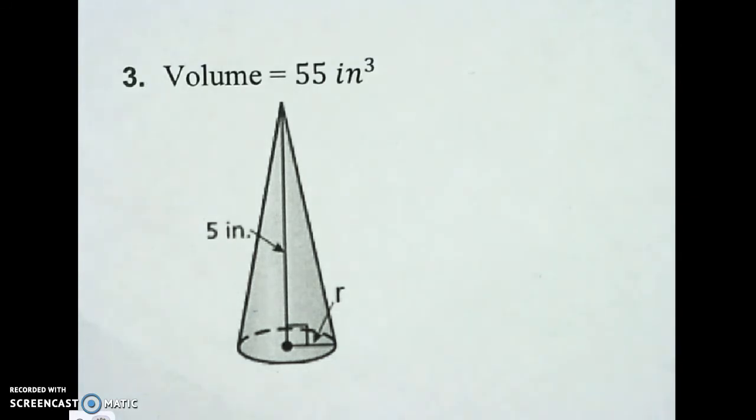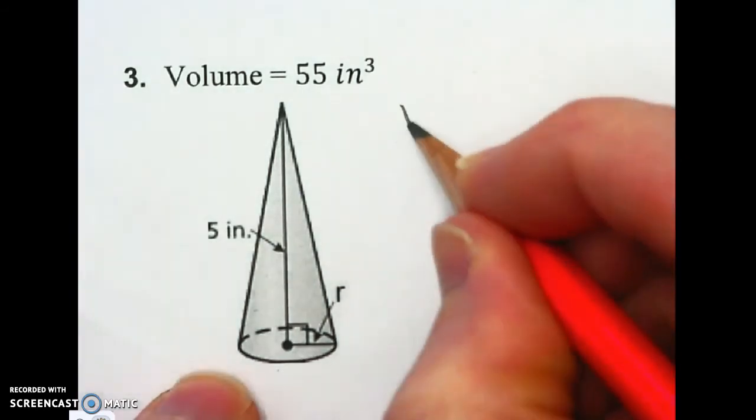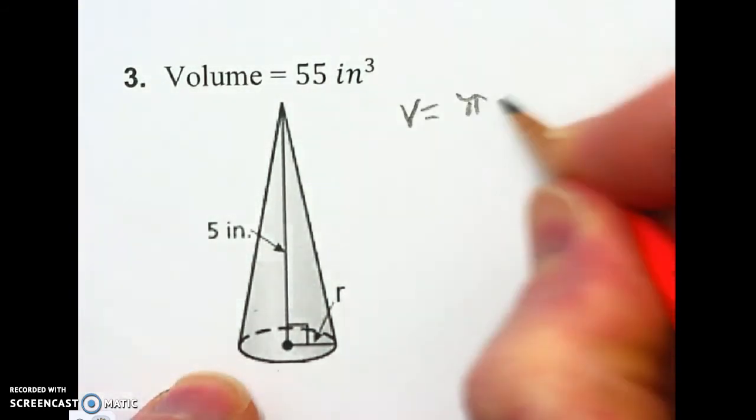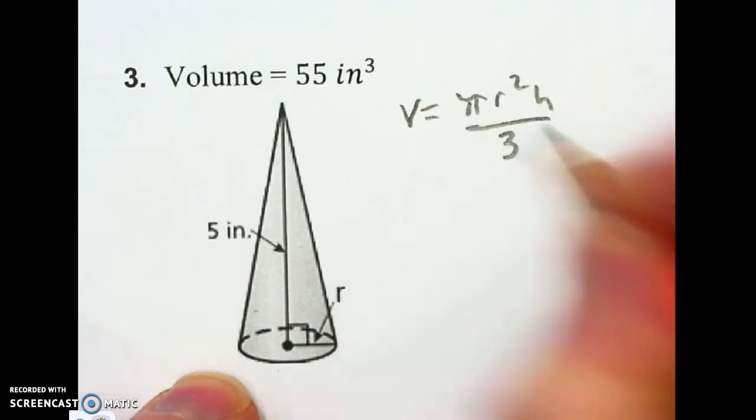First thing I'm going to do is write my formula for the volume of a cone. So V equals pi R squared H divided by 3.